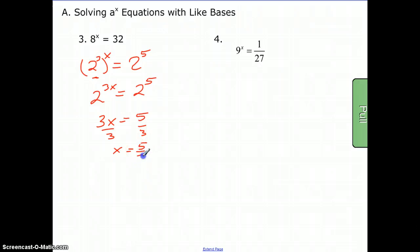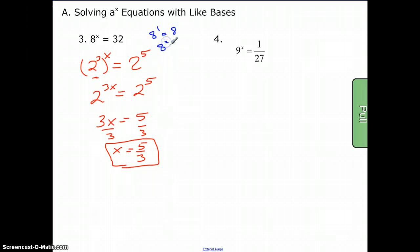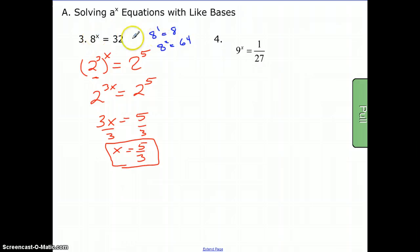If we go back up to the original problem, we see that 8^1 is eight, and 8^2 is sixty-four. So it should make sense that the power that eight raised to, since thirty-two is between eight and sixty-four, would be somewhere between one and two, and indeed it is one and two-thirds. All right, let's take a look at another problem.